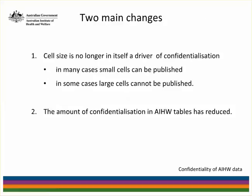With the adoption of the attribute disclosure definition of identifiability in the updated confidentiality policy, the two main changes that users of the Institute's data will have noticed are: first, that cell size is no longer in itself a driver of confidentialisation — in many cases small cells can be published, whilst in a few cases large cells cannot be published. The second change is that the amount of suppression required in Institute data releases is reduced, which in turn increases the value of our data to users.